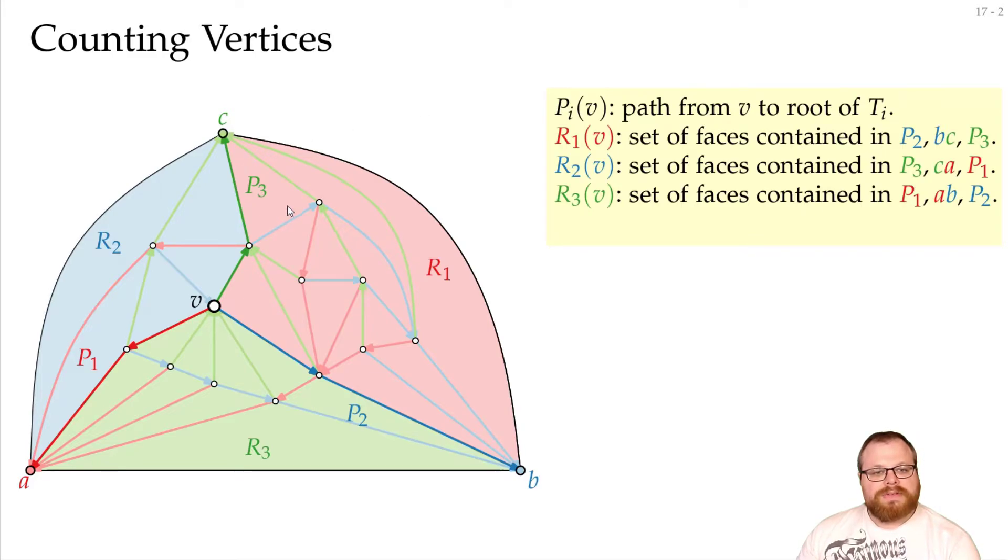But instead of counting how many faces we have in each region, now we only count how many vertices are in these regions. But if we count all the vertices in each region, then those vertices on the paths we would count twice, so we only assign them to one of those.